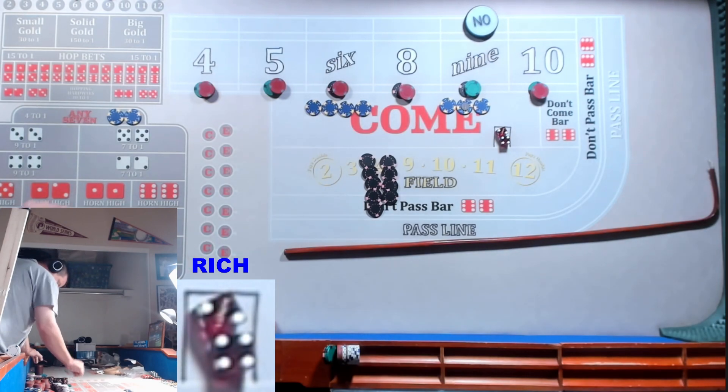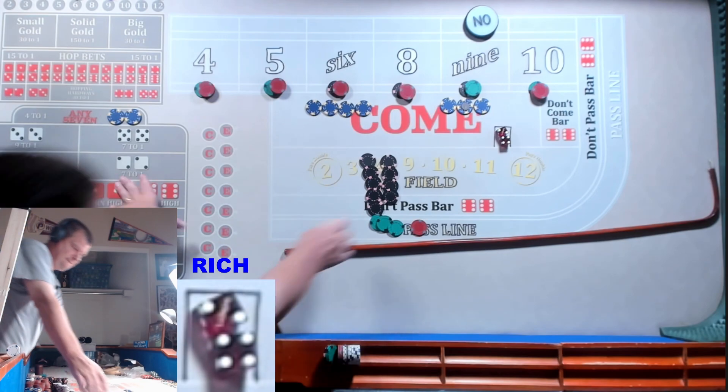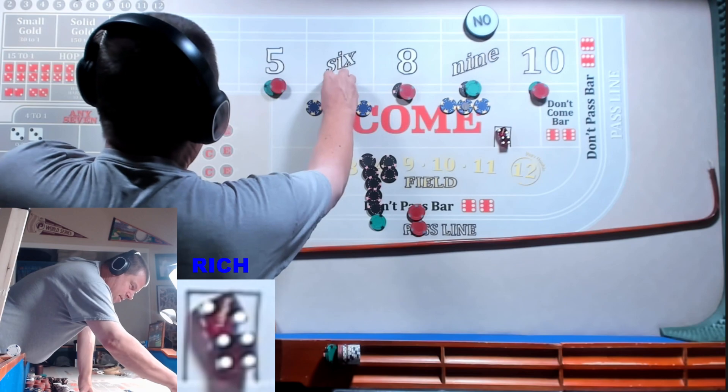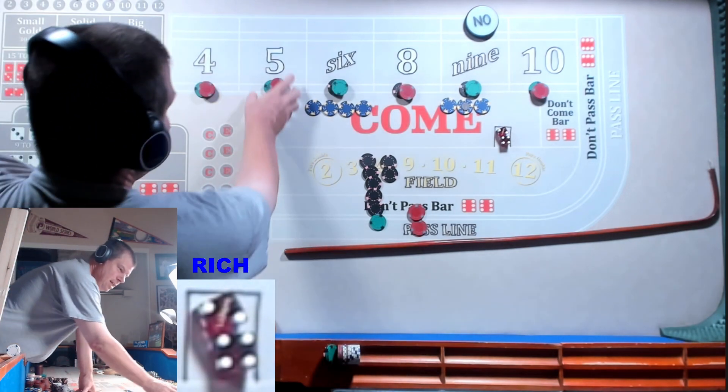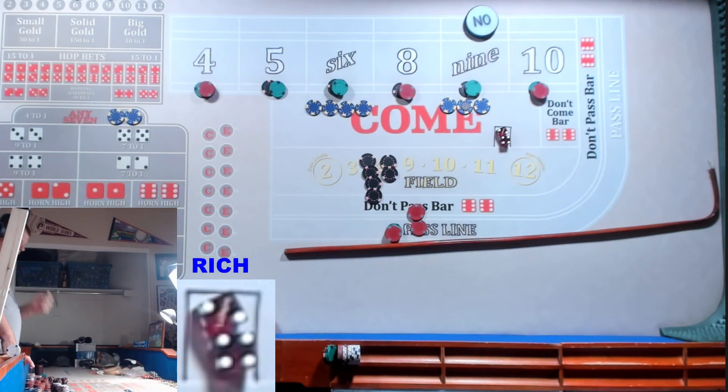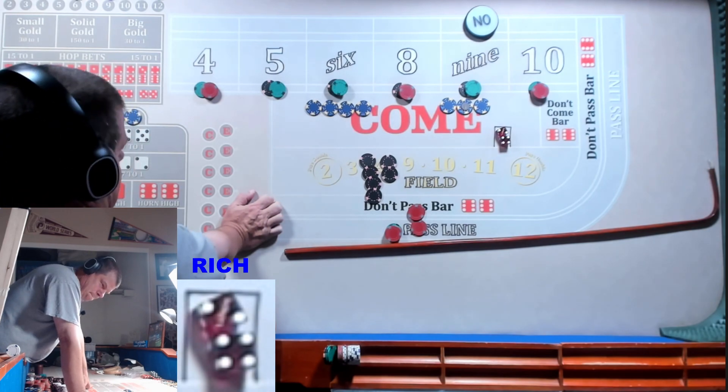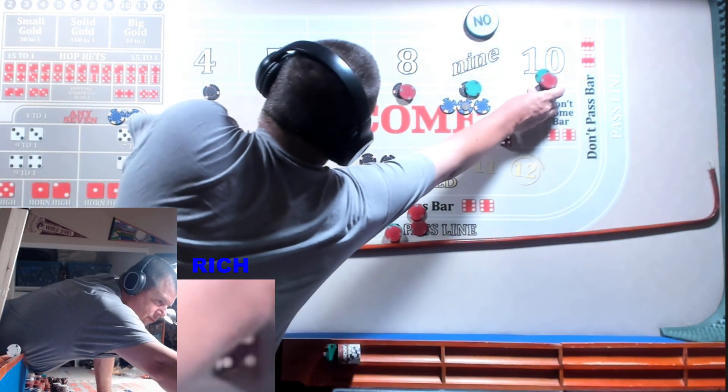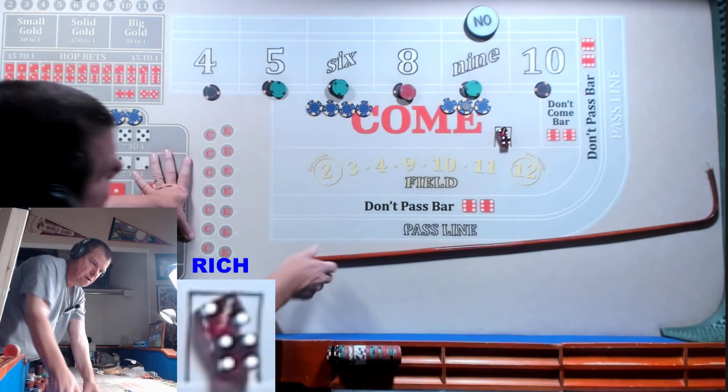We got a 6 easy. Yeah, there you go, mark it. $245 four times, that's 980. Wow. How much did I have on that 6? You had 210. Let's make it 450. And let's make the 5 look like the 9, 150. And what do I got on the 4 and 10? 45 each. We'll make them look like 100 each and we'll rack it all.